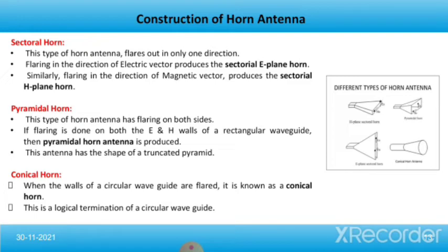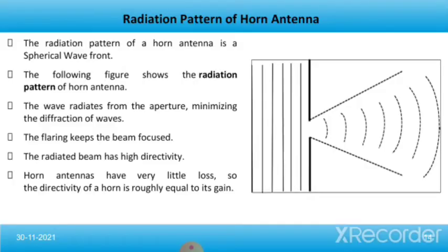Lastly, we have the conical horn. When the walls of a circular waveguide are flared, it is known as a conical horn, and this is a logical termination of a circular waveguide. Now we will talk about the radiation pattern of horn antenna. The radiation pattern of a horn antenna is a spherical wavefront. The wave radiates from the aperture, minimizing the diffraction of waves. The flaring keeps the beam focused. The radiated beam has high directivity, and since horn antennas have very little loss, the directivity of the horn is equal to its gain.